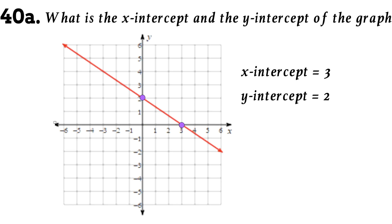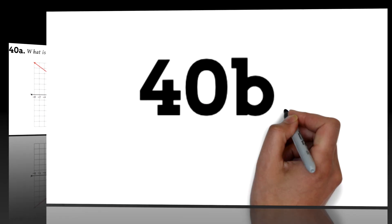If you are given the equation of a line and asked to find the intercepts, it requires a little more work. Let's look at it. Question 40b. What is the x-intercept and y-intercept of the line y equals 3x minus 6?